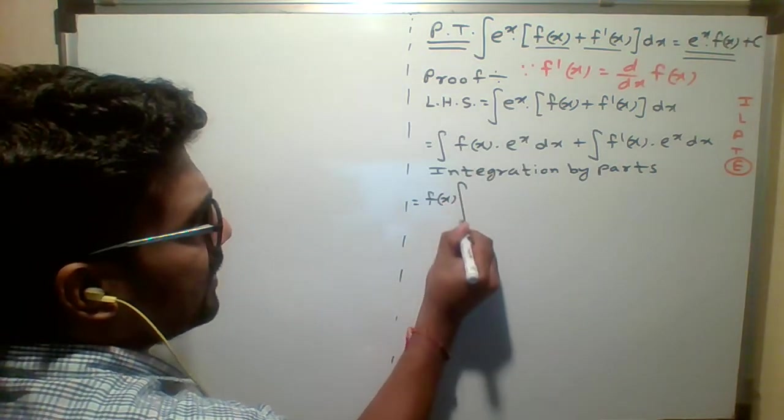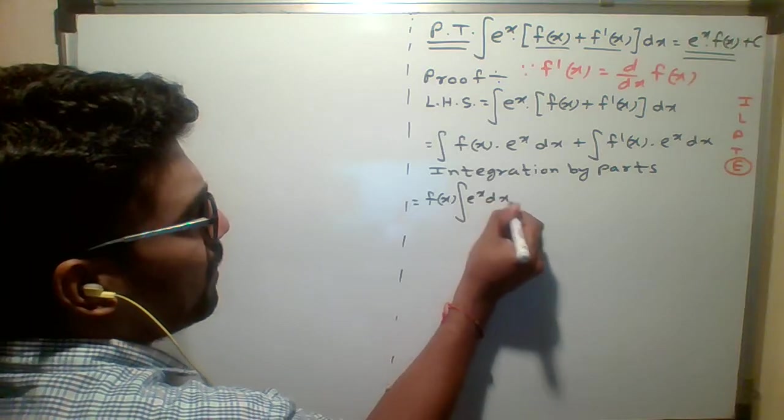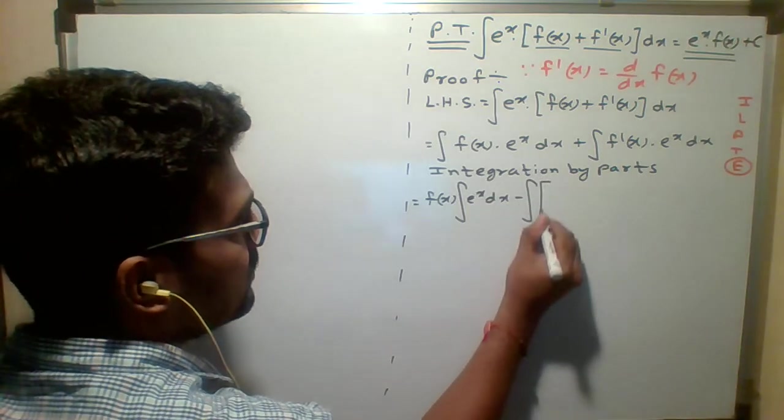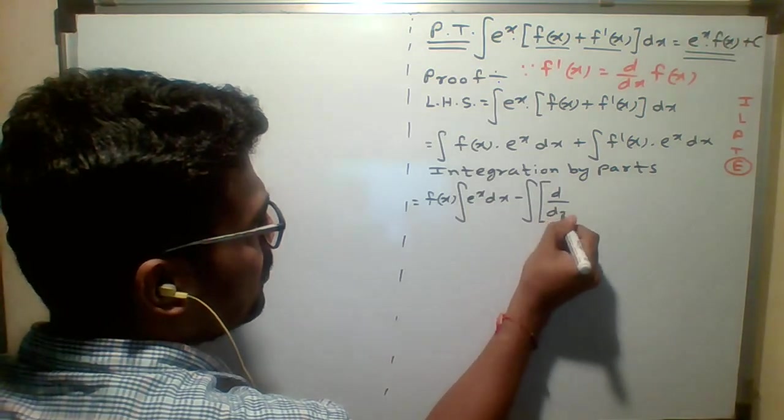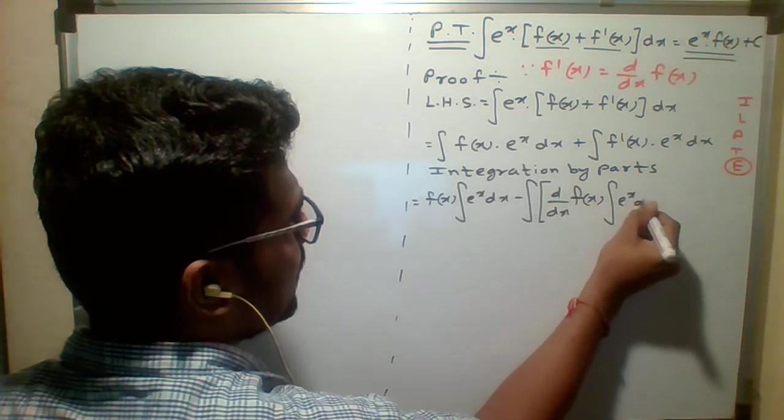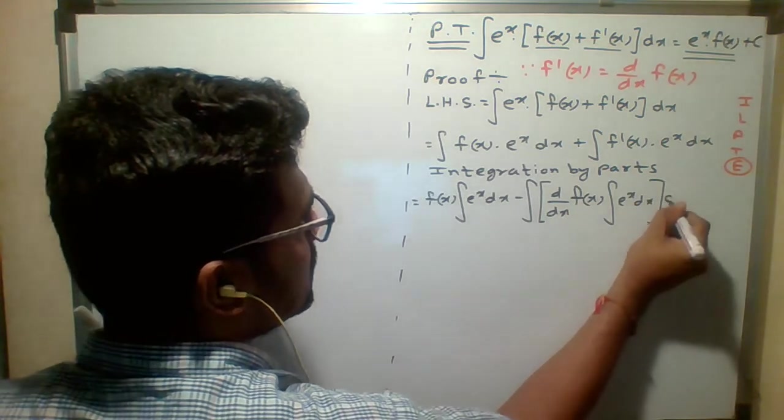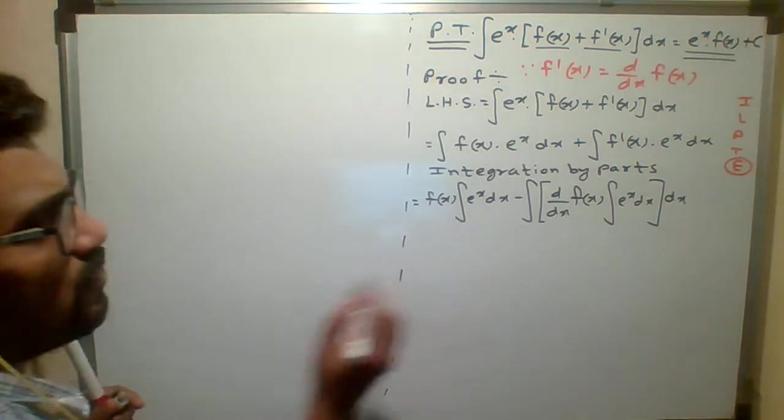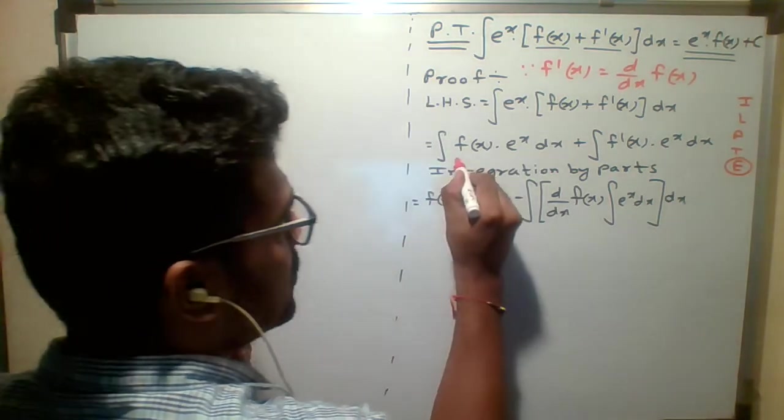So first integration of second minus integration derivative of first. Integration of second bracket close dx. This is the formula we applied for the function.